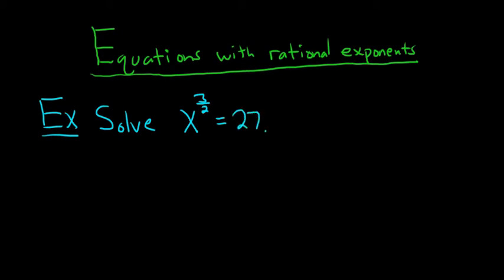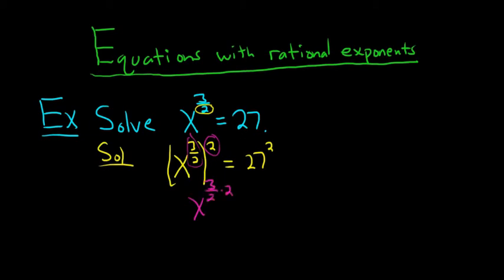So, we're looking for X. The way I do these is I focus on eliminating this number here on the bottom. To do that, you can square both sides. Here's why: if you have X to the 3 halves and you square it, the properties of exponents say that you just take the 2 and multiply it by the 3 halves. So, it would be X to the 3 halves times 2 equals 27 squared. And the 2's cancel, so you get X cubed equals 27 squared.